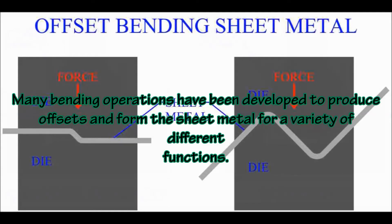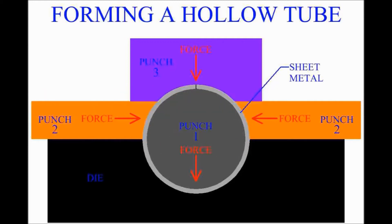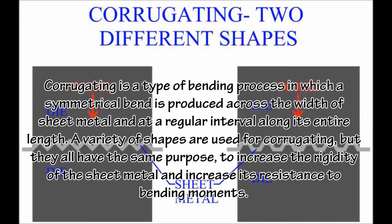Many bending operations have been developed to produce offsets and form sheet metal for a variety of different functions. Some sheet metal bending operations involve the use of more than two actions. For example, round tubes can be bent from sheet metal using a multiple-action machine. The hollow tube can then be seamed or welded for joining.